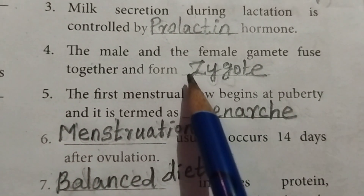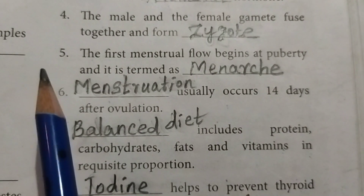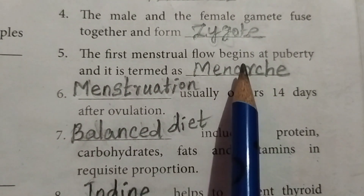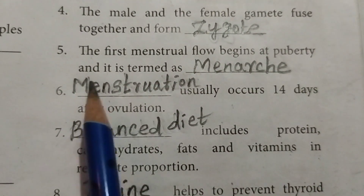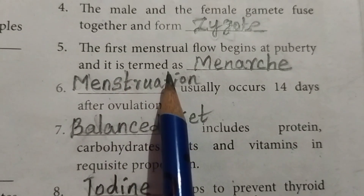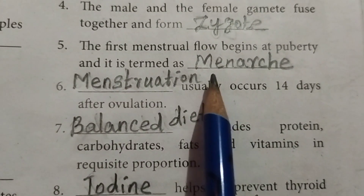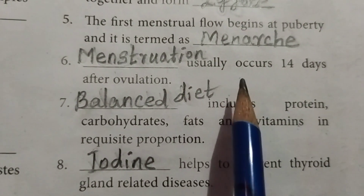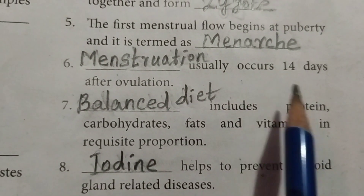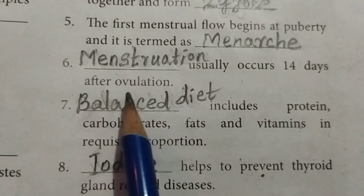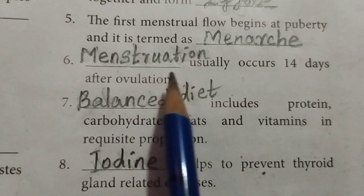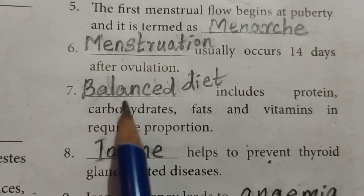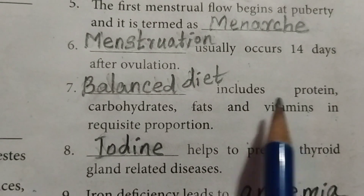Question 3: Milk secretion during lactation is controlled by blank hormone. Answer: Prolactin hormone. Question 4: The male and female gamete fuse together and form blank. Answer: Zygote. Question 5: The first menstrual flow begins at puberty and it is termed as Menarche.